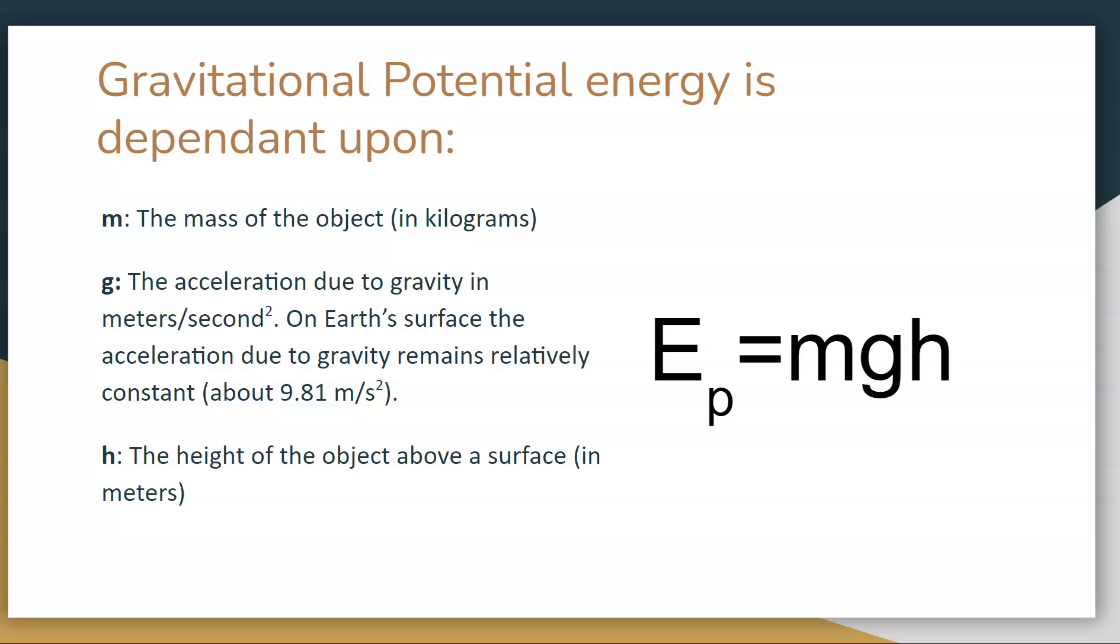So this is our formula: Ep, with a little p at the bottom showing potential energy, is equal to mgh. Mass times gravitational acceleration times height. Our energy for potential energy is measured in joules. Our mass is measured in kilograms. Our acceleration due to gravity is in meters per second squared, and our height is in meters. So these are all the units you will need to look for, use, and convert in order to do these types of questions.